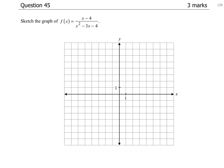Question 45. Sketch the graph of f(x) equals (x minus 4) all over (x squared minus 3x minus 4).